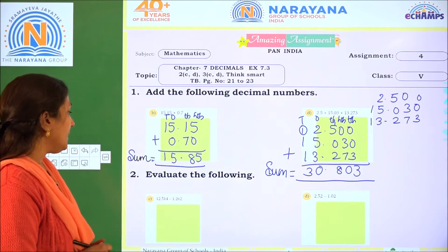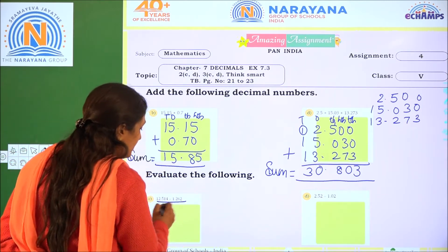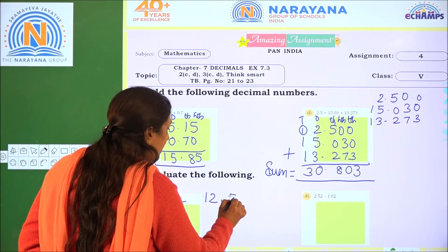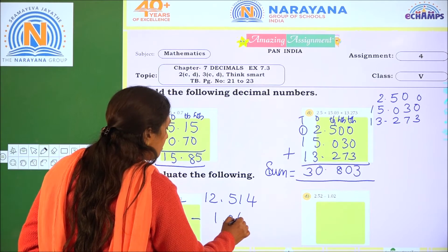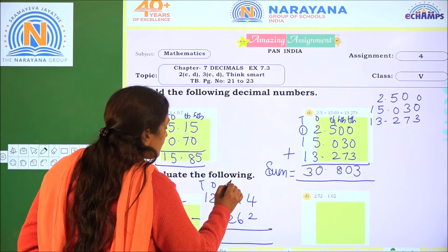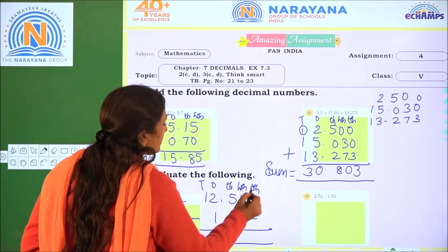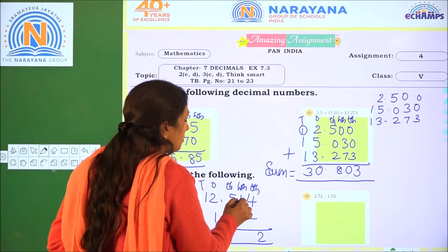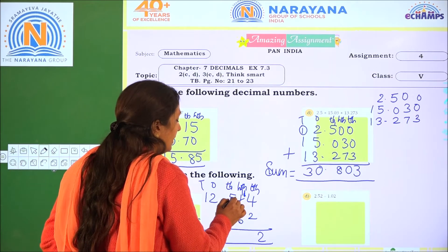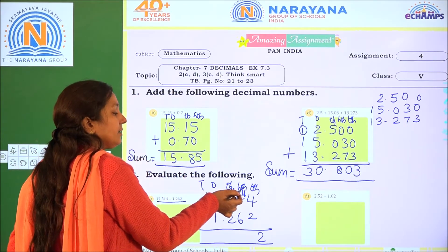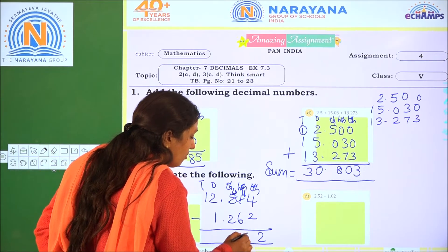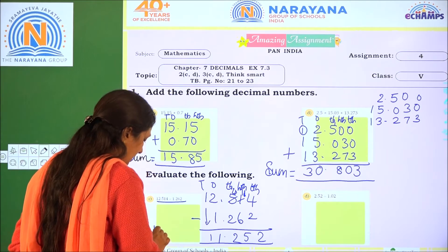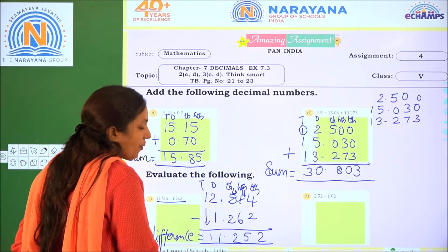Next, evaluate the following subtraction. The given decimals are 12.514 minus 1.262. Starting from right to left: 4 minus 2 is 2. For 1 minus 6, we regroup — 1 becomes 11, and the 5 in the tenth place becomes 4. 11 minus 6 is 5. 4 minus 2 is 2. 2 minus 1 is 1. Bring down the 1. So the difference is 11.252.